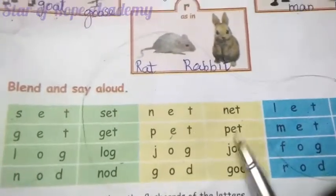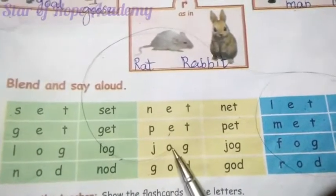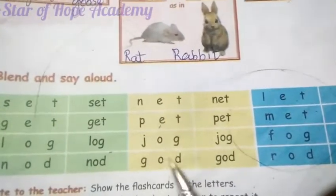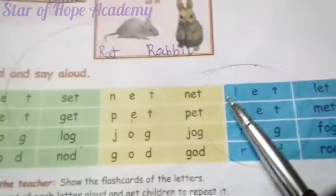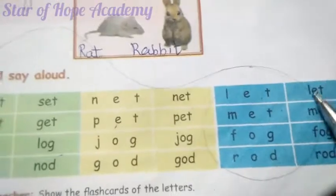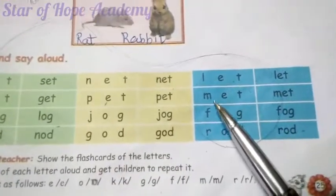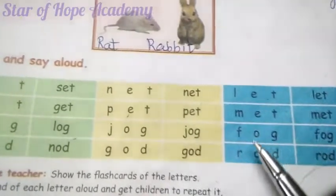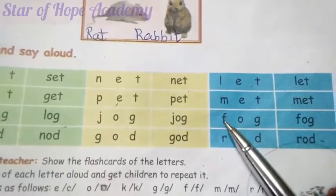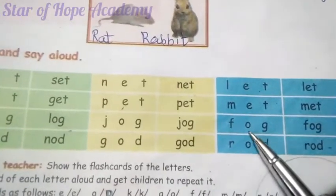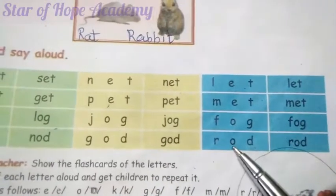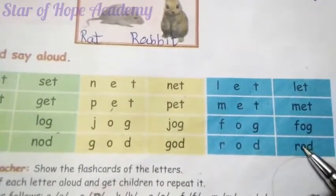E-T — pet. F-O-G — fog. G-O-D — god. L-E-T — let. M-E-T — met. F-O-G — fog. R-O-D — rod. Go to the next page.